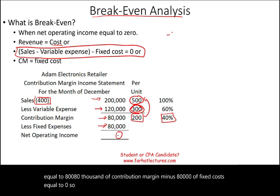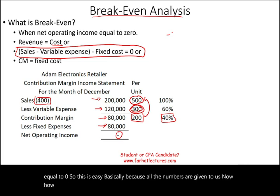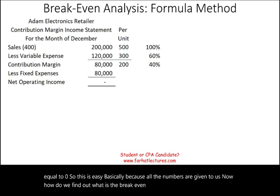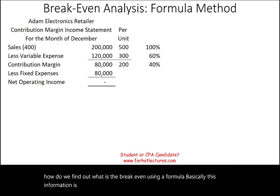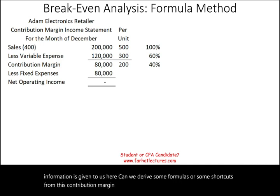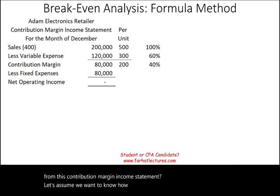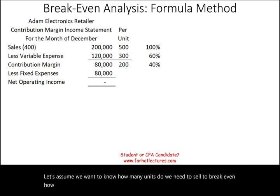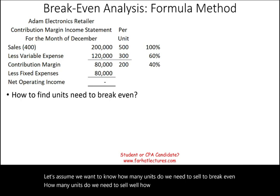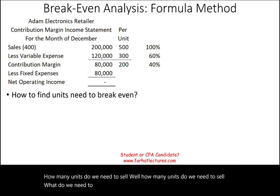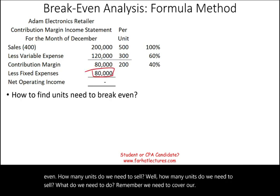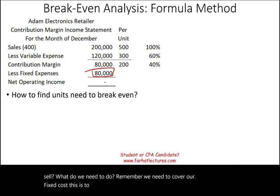Now, how do we find the break-even point using a formula? Can we derive shortcuts from the contribution margin income statement? To find how many units we need to sell to break even, we need to cover our fixed cost. Think of fixed cost as a bucket — we need enough contribution margin to fill it.